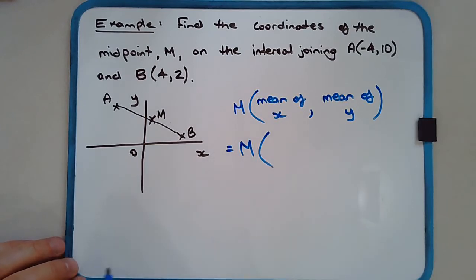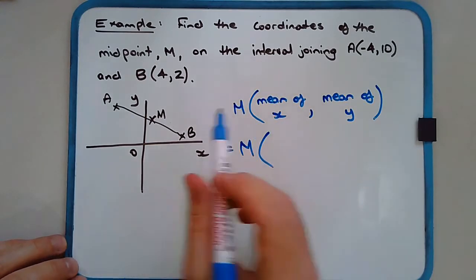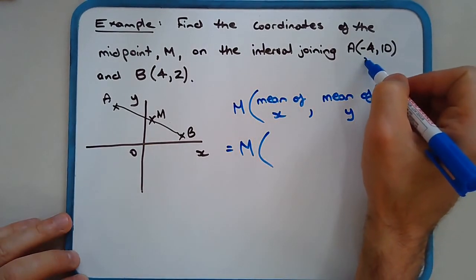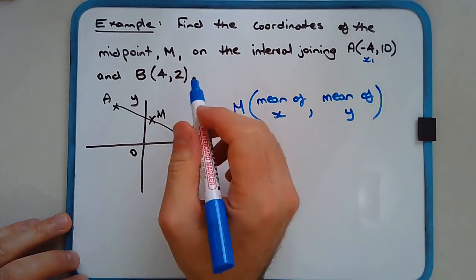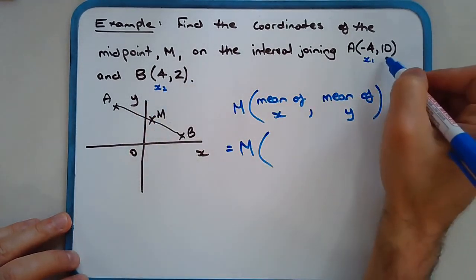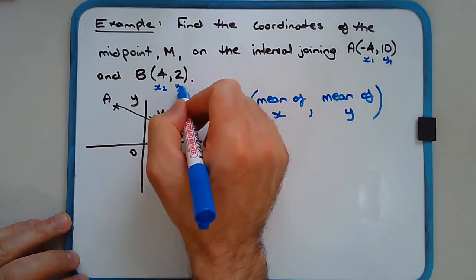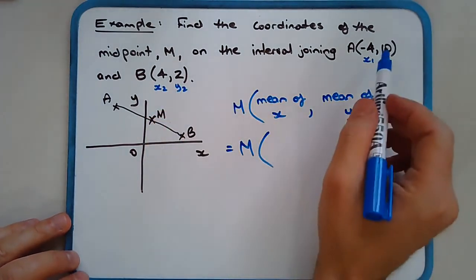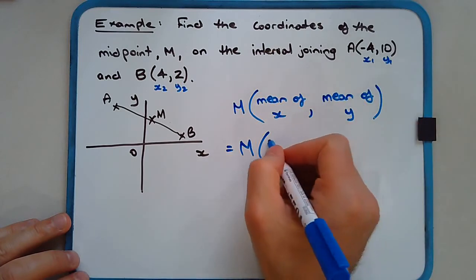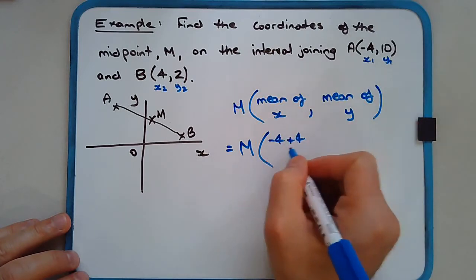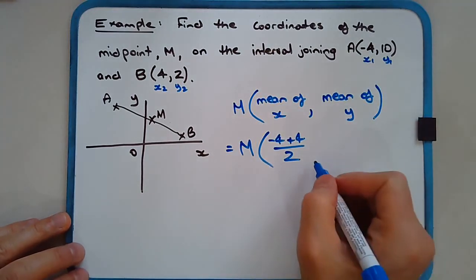So we write the point and then the coordinates. The mean of x—well, what are our two x values? We can call that x1, we can call this one x2, we'll call this one y1, we'll call this one y2. So we're going to add the x values together: (-4 + 4)/2, and now let's add the y's and divide by 2 to find the mean, so that's (2 + 10) over 2.